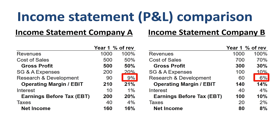On the research and development line, company A is spending more than company B. This is usually seen as a good thing, as today's research and development expenses hopefully lead to high-margin innovative products and services to sell in the future.